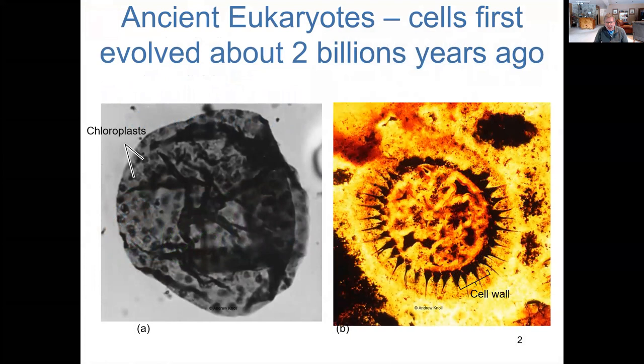We can go back some 2 billion years to see the first eukaryotic cells on Earth. Prokaryotes evolved some three and a half to 4 billion years ago, so the eukaryotes are coming much later. This follows the cyanobacteria helping to infuse oxygen into the atmosphere, which paved the way for the eventual evolution of eukaryotic cells.